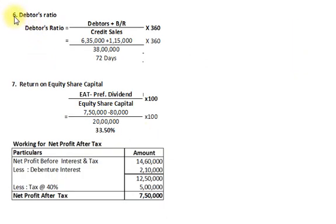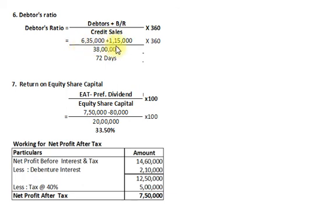Sixth ratio: Debtors Ratio. Formula: (debtors + bills receivable) ÷ credit sales × 360 days. Debtors Rs. 6,35,000 + bills receivable Rs. 1,15,000 = Rs. 7,50,000, divided by credit sales Rs. 38,00,000, multiplied by 360 = Debtors Ratio 72 days.